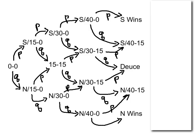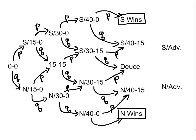We've already hit the two absorbing states: server winning or non-server winning means game over. Any game is going to wind up with one of those two things happening. The states that haven't appeared yet are the advantage states. Server's advantage means if the server wins the next point, the server has won the game; if the server loses, it goes back to deuce. Similarly for when the non-server has advantage.